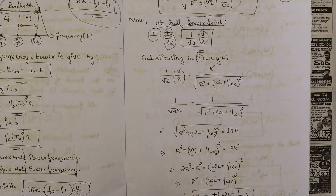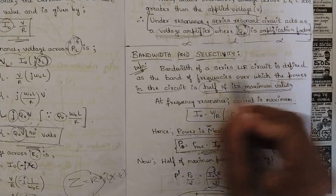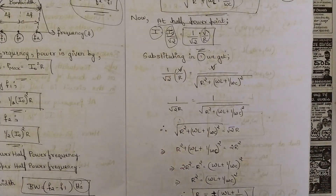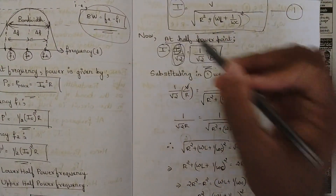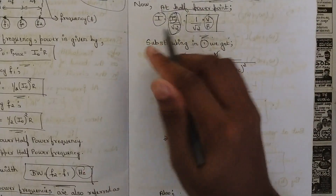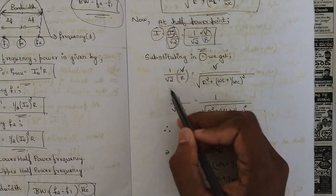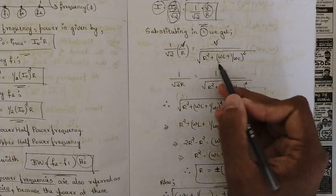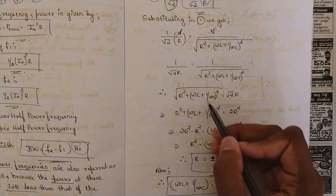The definition of bandwidth is the band of frequencies over which the power in the circuit is half of its maximum value. We are splitting the current into two halves, each equal to i₀/√2. Substituting (1/√2)(v/R) in place of i, the v cancels, and we are left with 1/(√2 · R) = 1/Z, giving us R√(R² + (ωL + 1/ωC)²) = √2 · R.